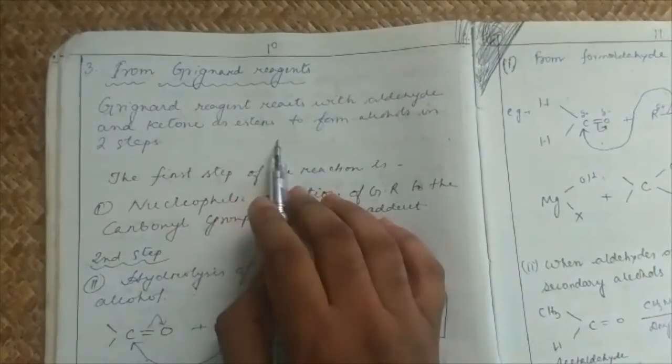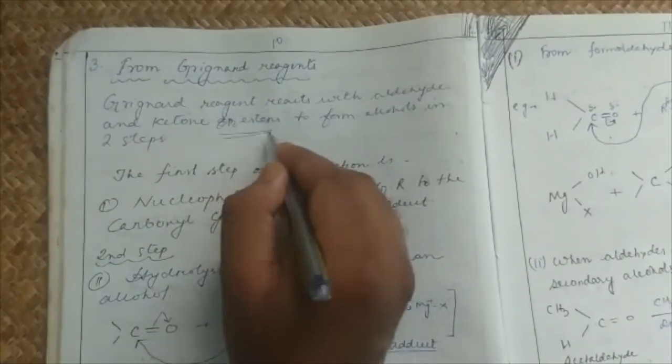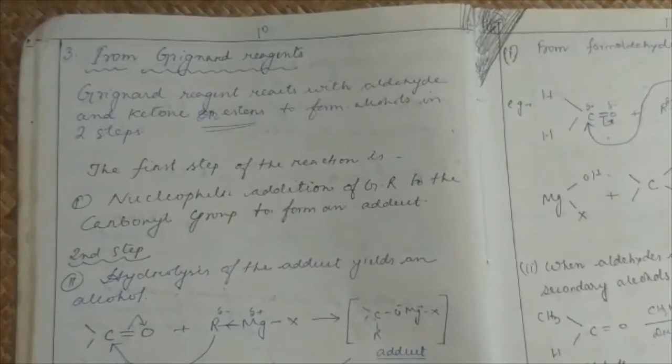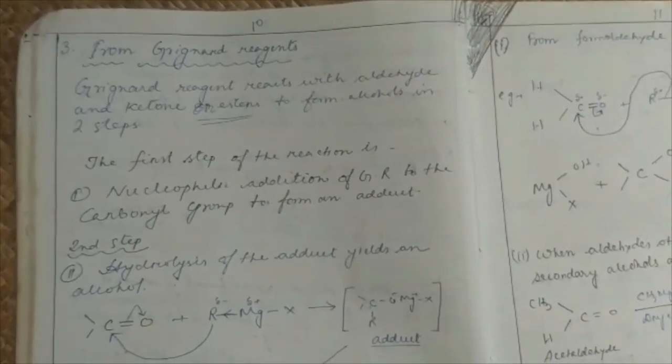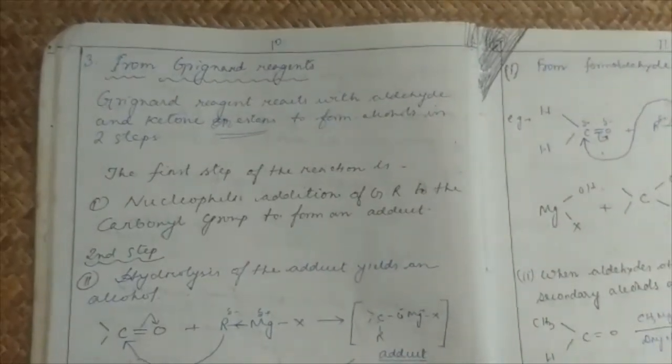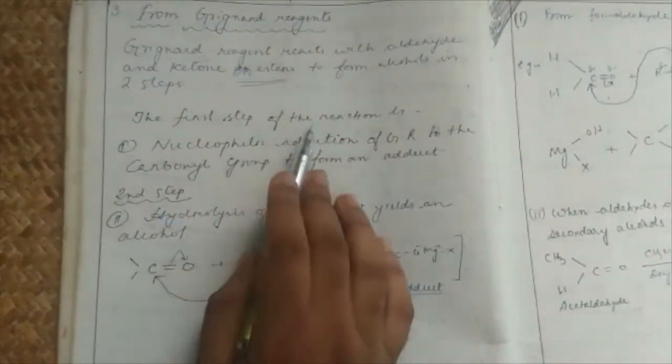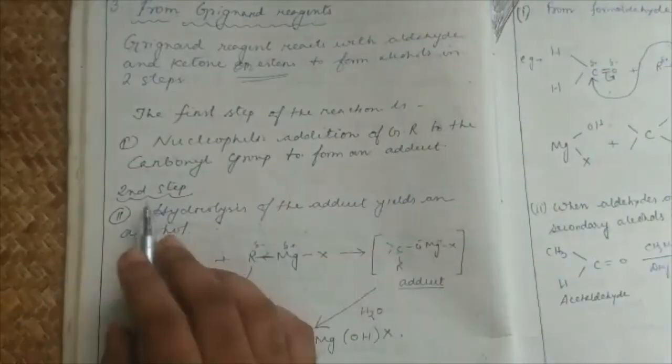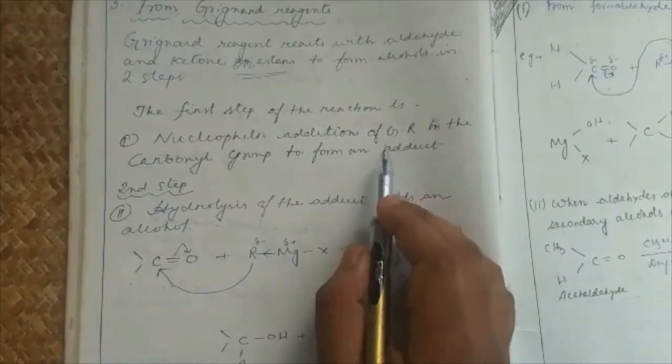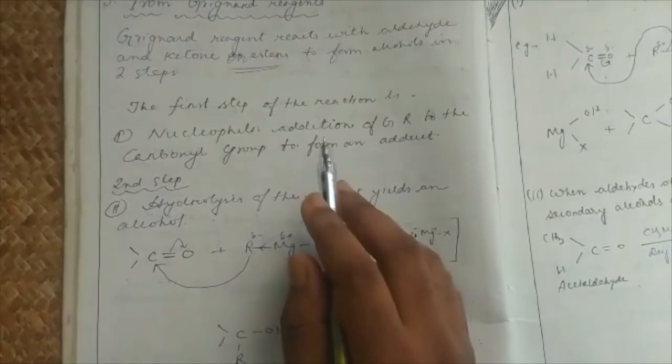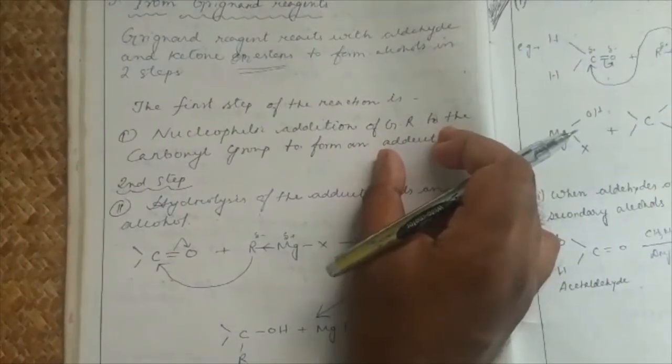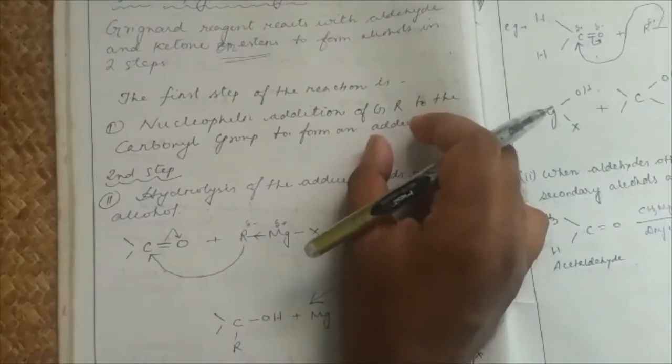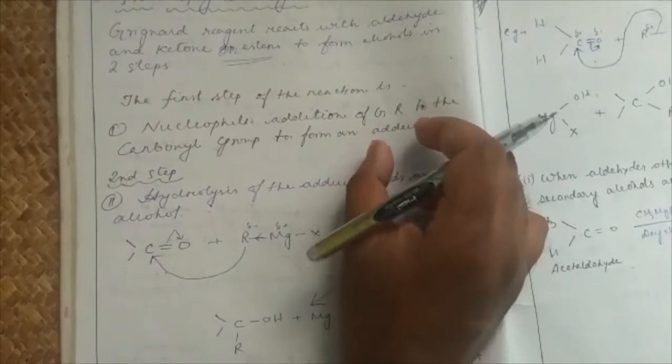Grignard reagent reacts with aldehyde and ketone and ester, nucleophilic addition with carbonyl to form alcohol in two steps in which the first step.